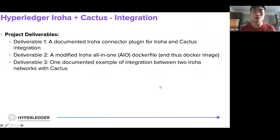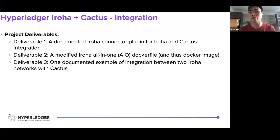My final deliverables were: deliverable one, a documented Iroha connector plugin for Iroha and Cactus integration; deliverable two, a modified Iroha all-in-one Docker file, from which we are able to produce a Docker image; and deliverable three, one documented example of integration between two Iroha networks with Cactus — more specifically, an asset transfer between two distinct Iroha nodes.